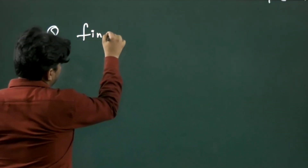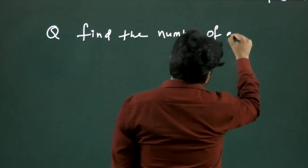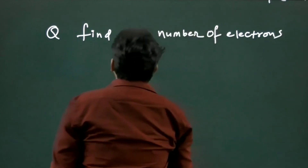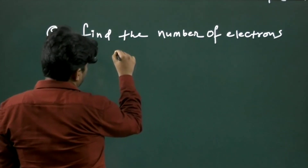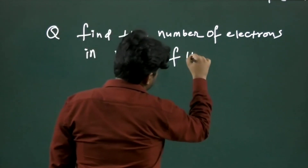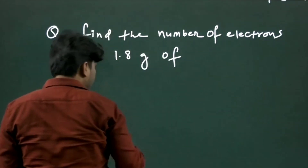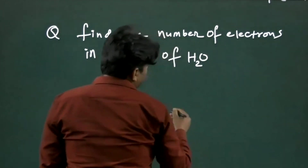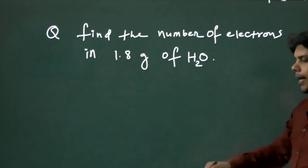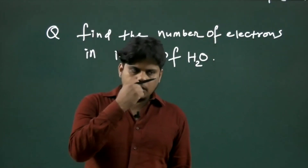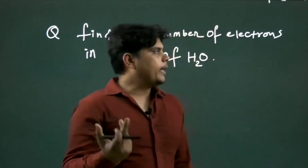Now, if somebody asks to find the number of electrons, protons, or neutrons, just check this out. The next question is: find the number of electrons in 1.8 grams of water. In our last question we calculated number of atoms; now we have to find number of electrons.